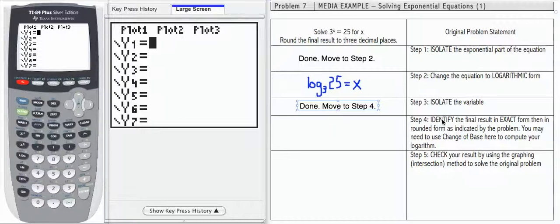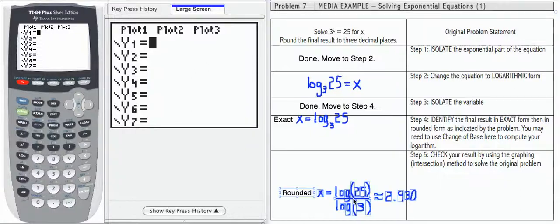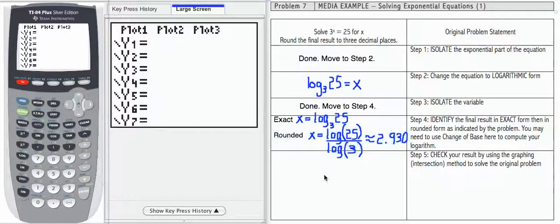Step 4 is to identify the final result in exact form. So let's do that first, because we've actually already figured out that part. The exact form is log base 3 of 25. If I want to find the rounded form, I'm going to need to use change of base. So if I round this, I need to compute with change of base log 25 divided by log 3 is approximately 2.930 rounded to 3 decimal places.